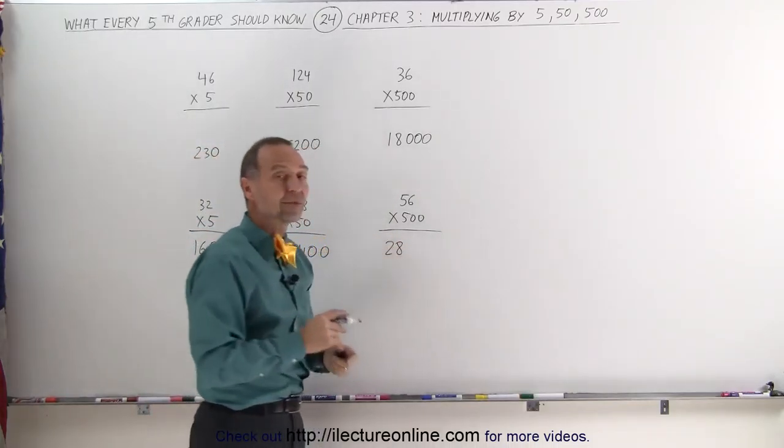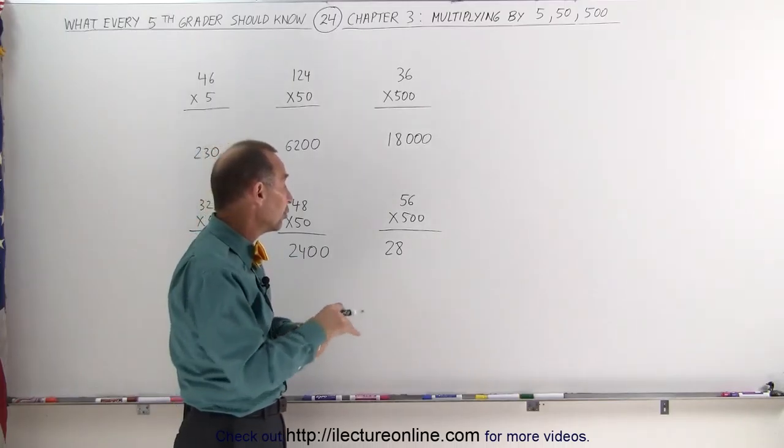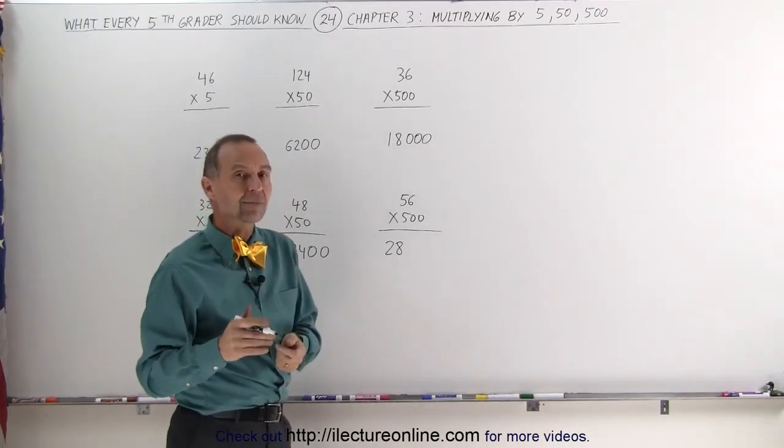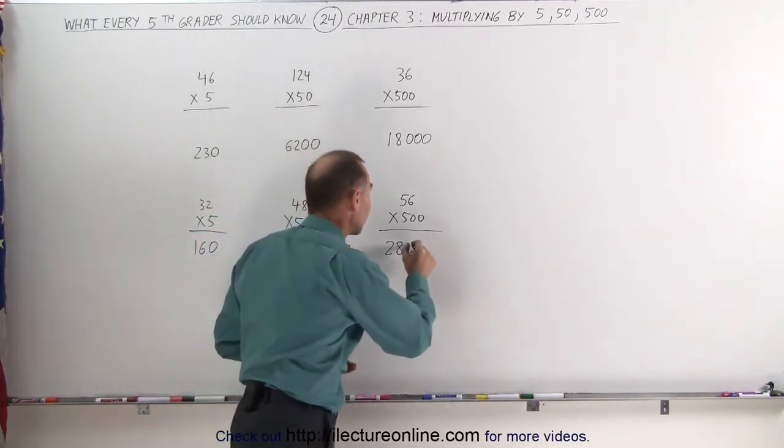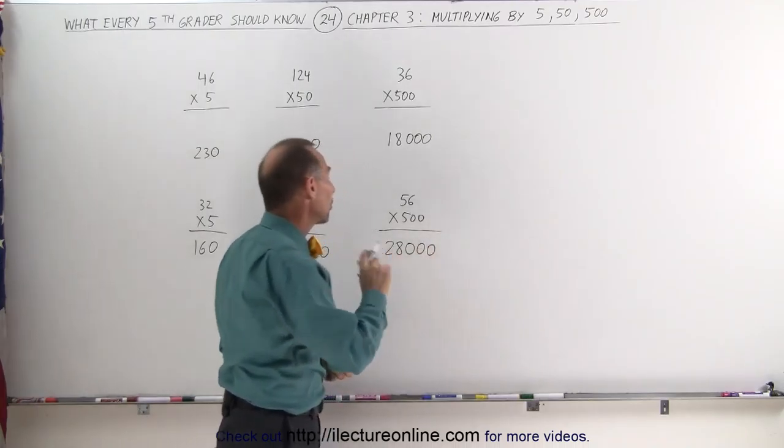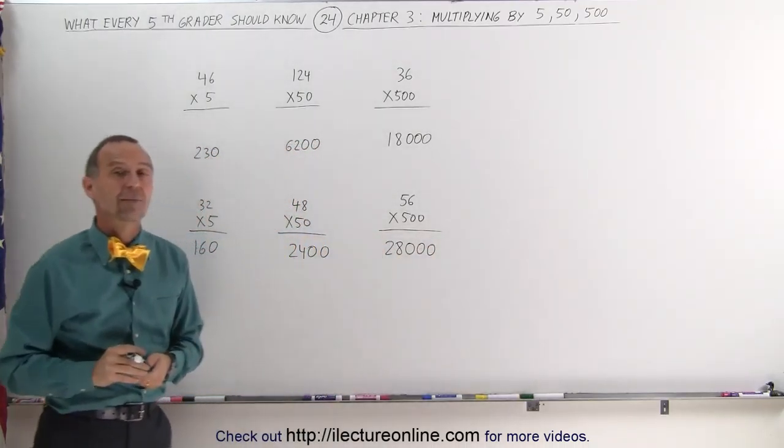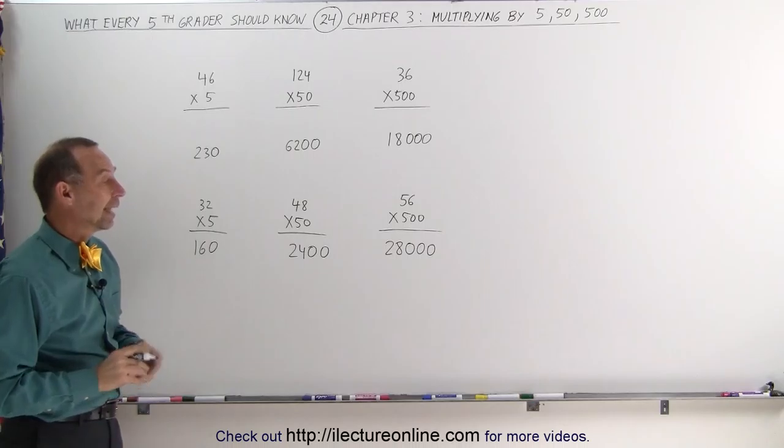And then I multiply times a thousand instead of times 500, twice 500. Multiplying times a thousand is like adding three zeros. And notice how quickly we can take 56 and multiply times 500. And that's how we do it.